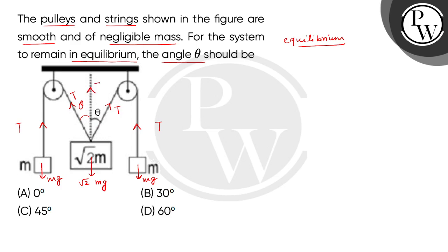So here we have the horizontal component of the string, due to the right string, this is T cos theta and due to the string in the left inclined part, this is also T cos theta.